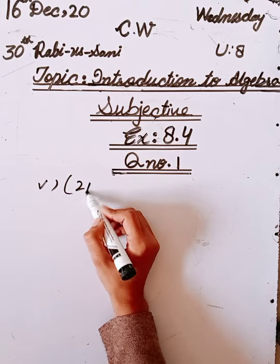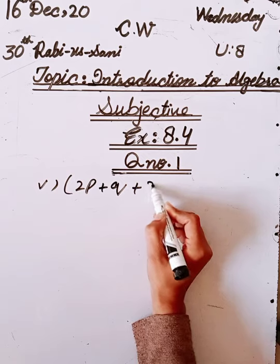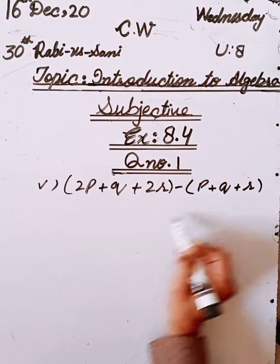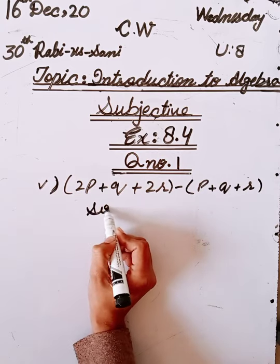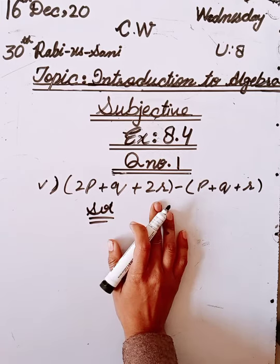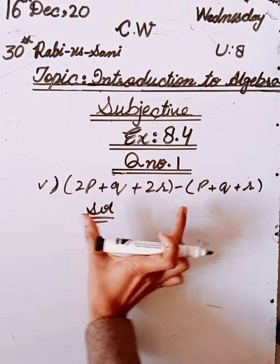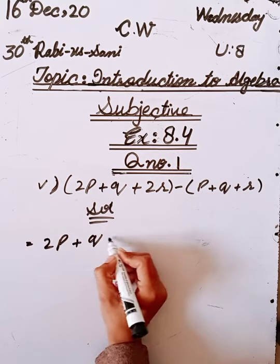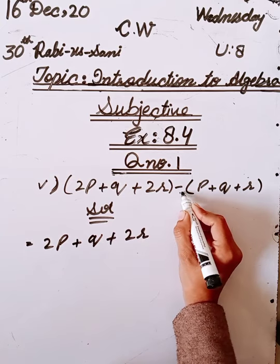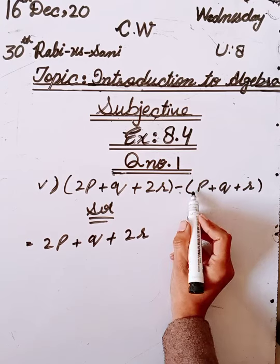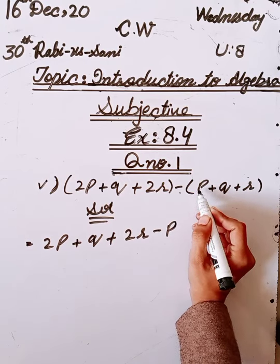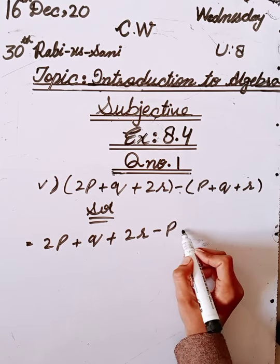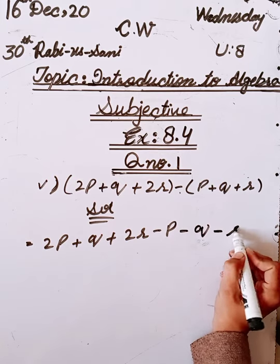Part five: (2p + q + 2r) minus (p + q + r). Let's start the solution. First we have to write the first value as it is: 2p + q + 2r. After that we multiply minus with all the values: minus p, minus q, minus r. Because there's nothing before it, that means there's a plus sign.